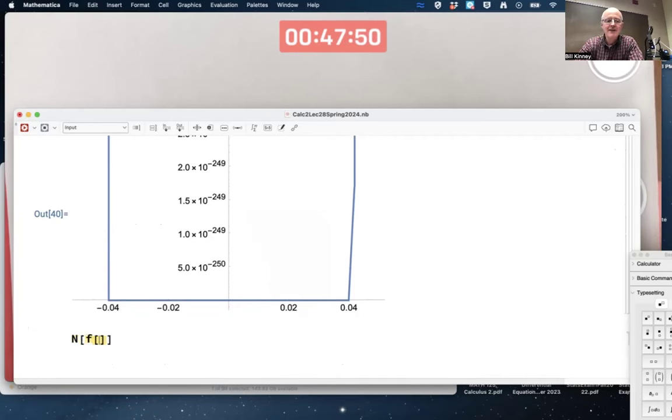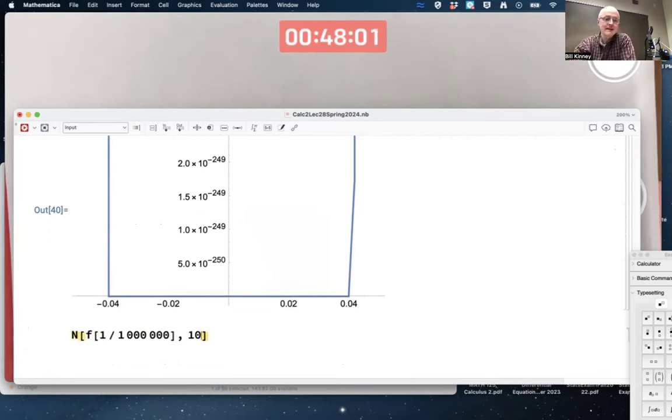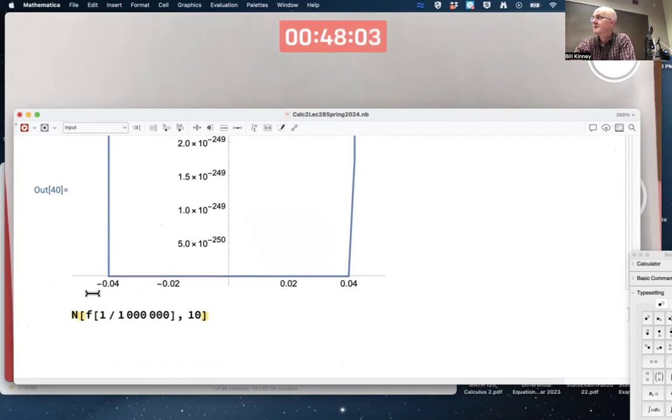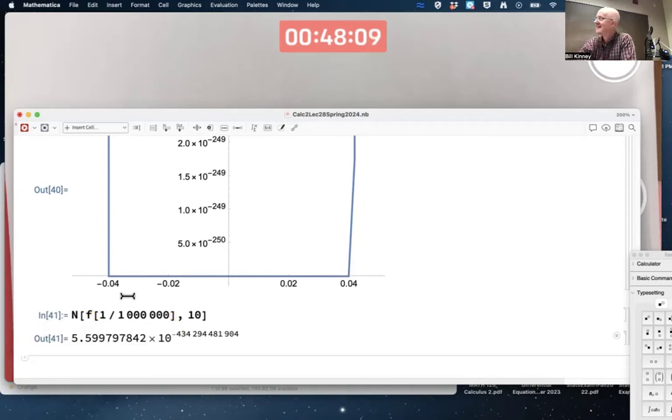If I enter things as fractions like this, it will go ahead and compute it amazingly. So that's one over a million, 10 to the negative 6, being plugged into f. The output is the smallest number you've ever seen in your life: 10 to the negative 434 billion 294 million 481,904 power.